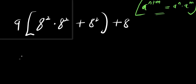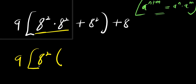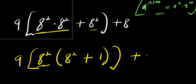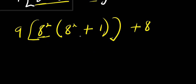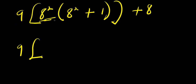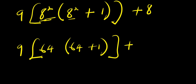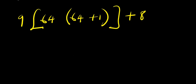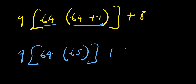From here we have 9 times 8^2 times (8^2 + 1) plus 8. Now 8^2 is 64, so 64 plus 1 is 65. This gives us 9 times 64 times 65 plus 8.